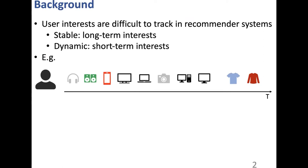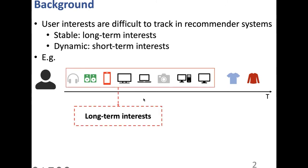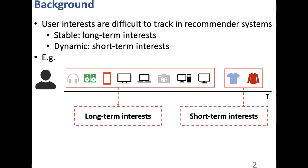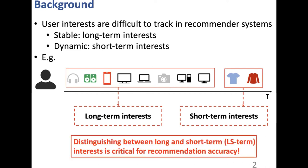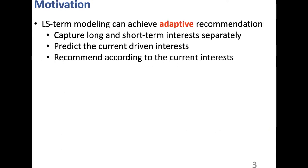In this slide, there is a toy example. For this user, his long-term interest may be electronic devices, while his short-term interest might be clothes. The distinguishing between long- and short-term interest is critical for recommendation accuracy. The motivation is to achieve adaptive recommendation, and to achieve this goal, we first need to capture long- and short-term interest separately.